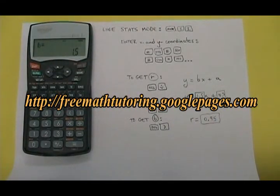I'm finished. The equation of my regression line is y equals 1.5x plus 4.5, and my r value is 0.95, which is a very strong positive correlation.